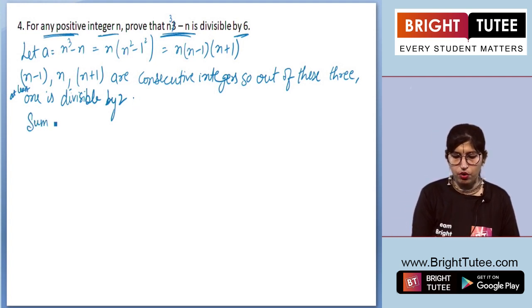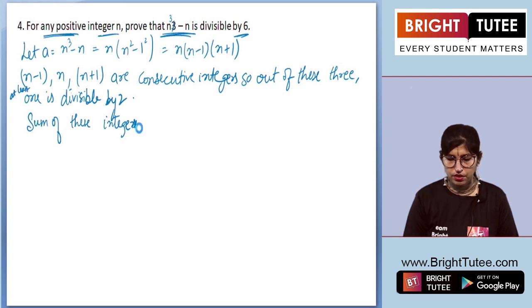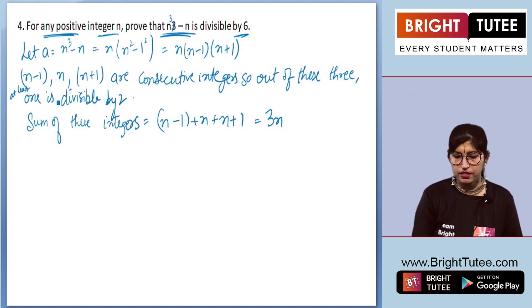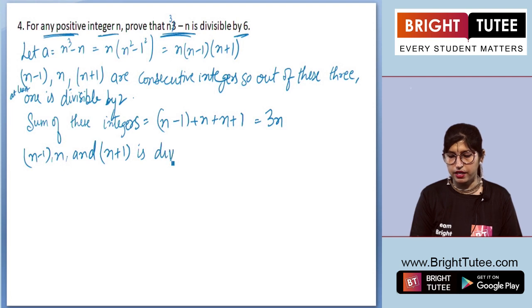Now let's take out the sum of these integers. There will be (n - 1) + n + (n + 1) which equals 3n. Since the sum of these integers is 3n, then n - 1, n, and n + 1 is divisible by 3.